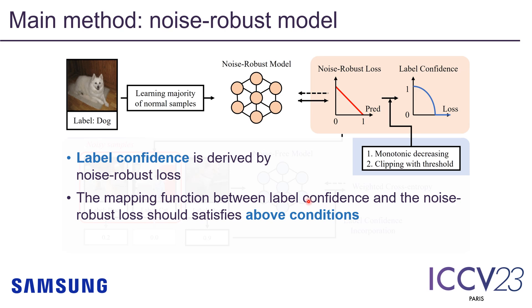Label confidence is derived by the noise-robust model. The model is trained by a noise-robust loss such as MAE or GCE, which are known to train easy samples. So in the early phase, the noise-robust model can guide the noise-free model to train on certain easy samples. We also propose intuitive constraints to define the mapping function between the noise-robust loss and label confidence.